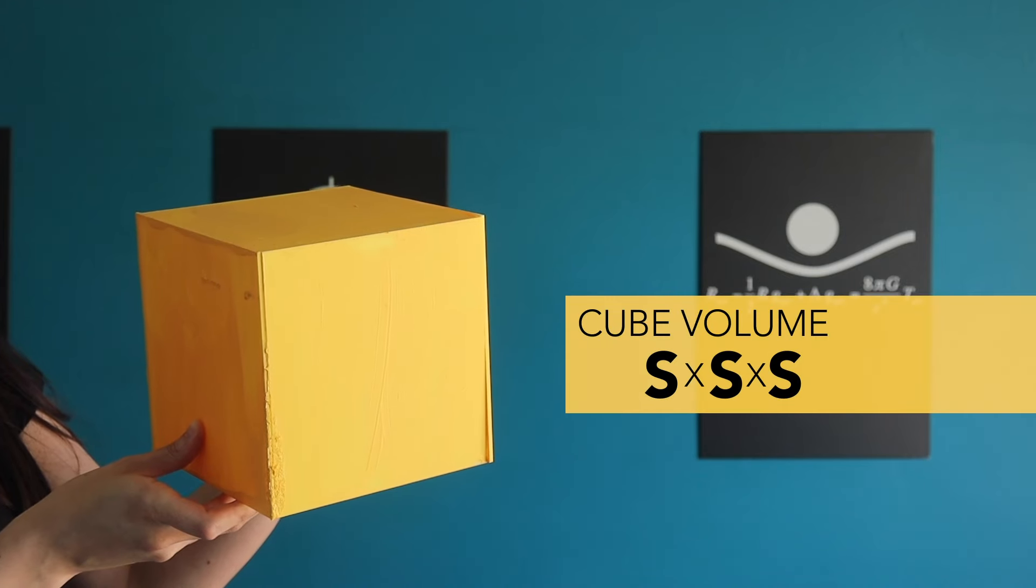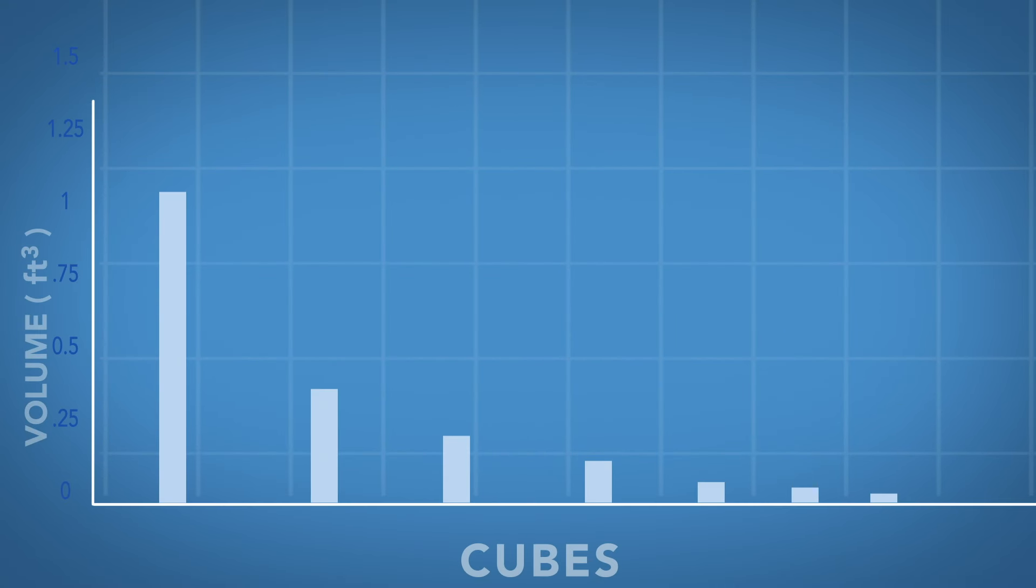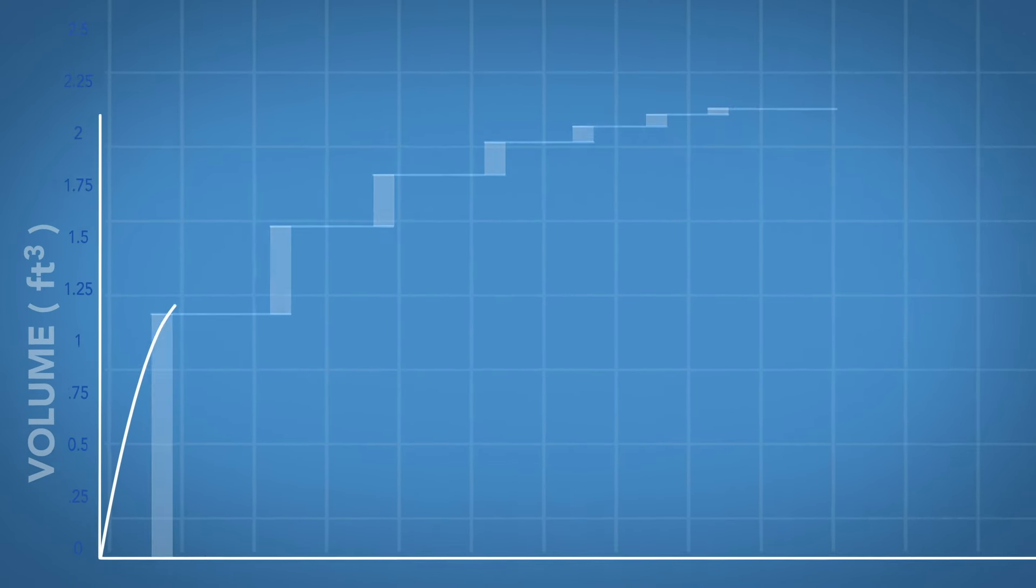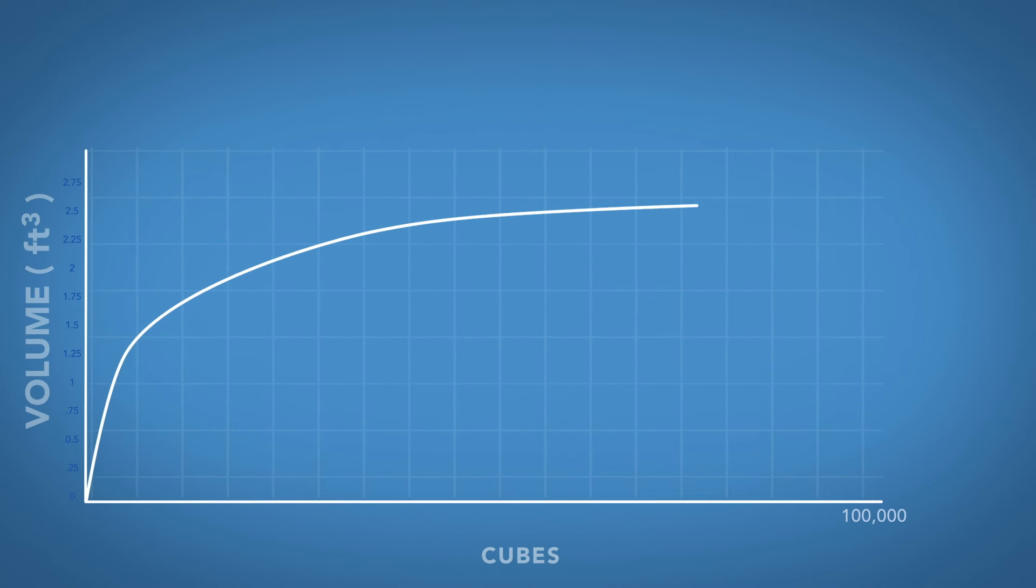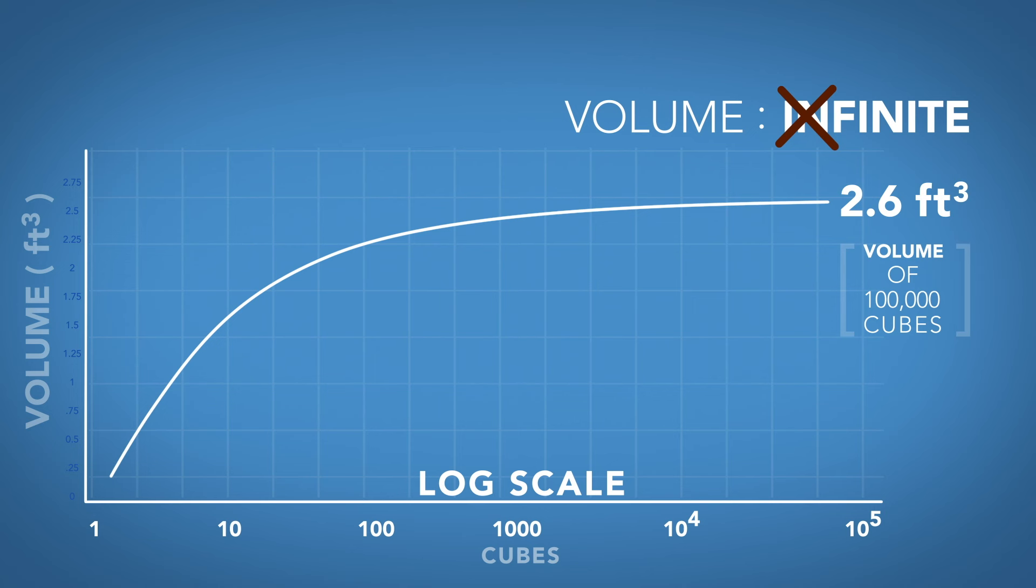Now let's calculate their volume. The volume of a cube is just the height times width times depth, which gives us s cubed. Again, to calculate the total volume, we just add all the individual volumes together. Let's see what happens when we sum them up. It's increasing at a much slower rate this time. At 100,000 cubes, the volume is still only 2.6 cubic feet. Even when we plot it on a log linear graph, the curve flattens out. Rather than going off to infinity, the volume of an infinite number of cubes approaches a finite number.